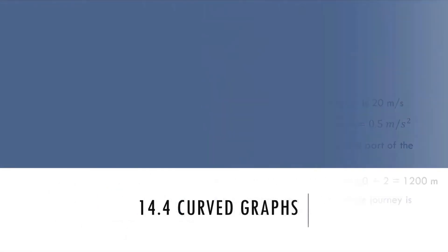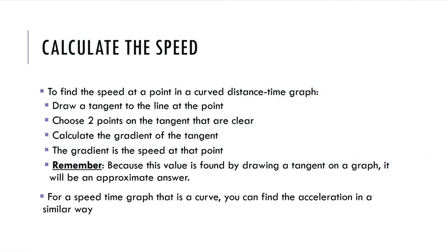Last but not least, curve graphs. So, to find the speed at a point in the curve distance time graph, you have to draw a tangent to the line at the point. Choose two other points on the tangent that are clear to see the coordinate. Calculate the gradient of the tangent. The gradient is the speed at that point. You have to remember, because this value is found by drawing a tangent on the graph, it will be an approximate answer because the tangent is not specific. For a speed time graph that is a curve, you can find the acceleration in a similar way.